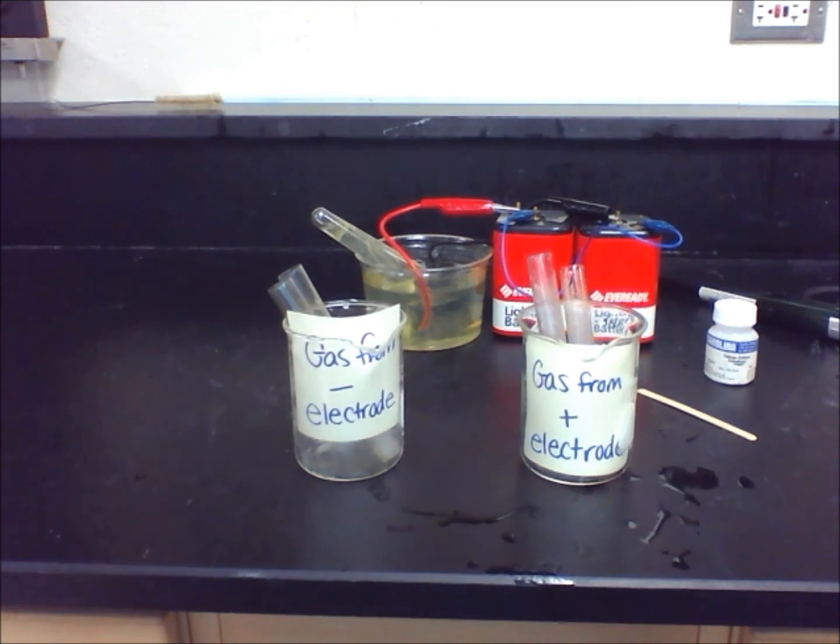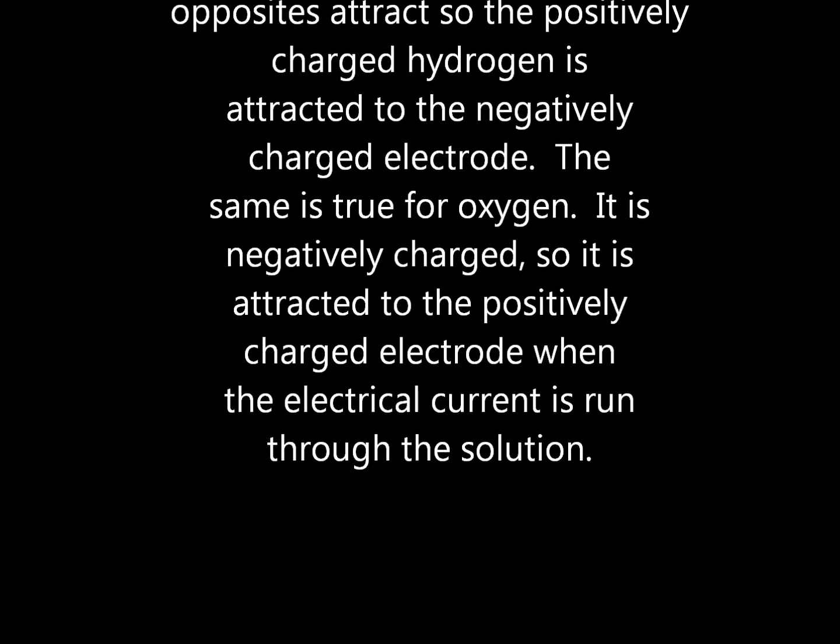The reason the hydrogen was above the negative electrode is because hydrogen is positively charged. As you guys know, opposites attract so the positively charged hydrogen is attracted to the negatively charged electrode. The same is true for oxygen - it is negatively charged, so it is attracted to the positively charged electrode when the electrical current is run through the solution.